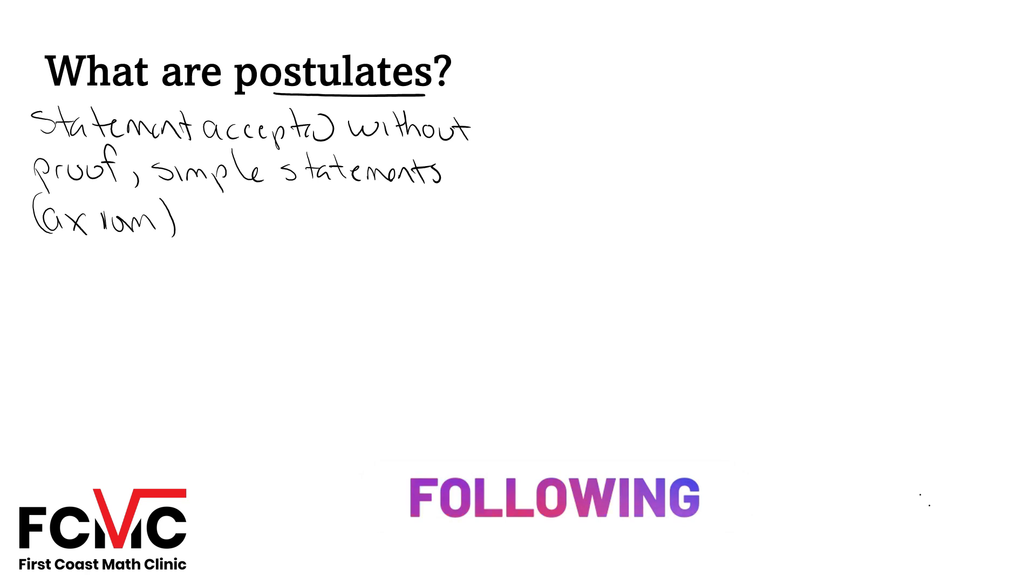The first postulate we're going to get into is known as the segment addition postulate. This is a really simple statement. We're going to start with segment AC, and we're going to say we have point B somewhere on AC.